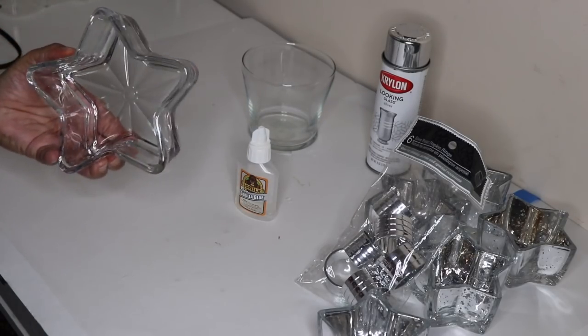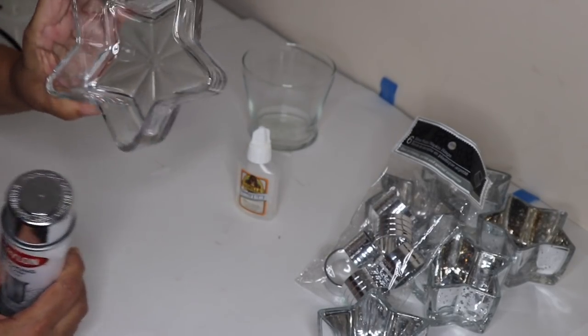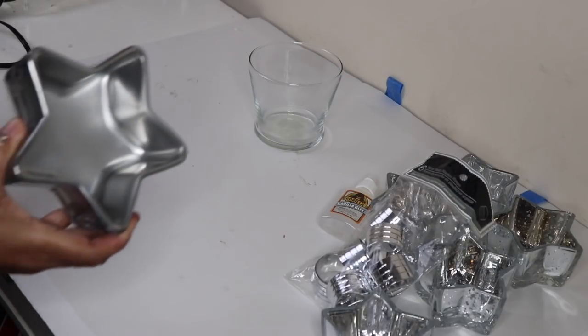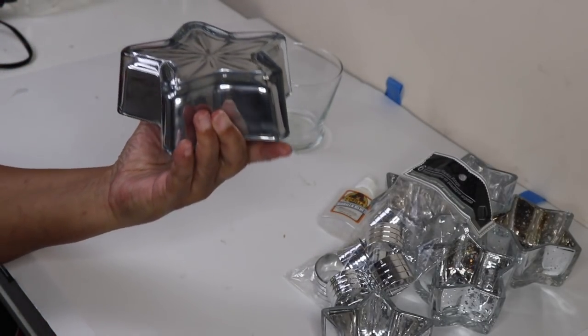First thing you want to do is take your glass bowl outside and spray paint it with the looking glass spray paint. Spray paint the inside of the bowl. After five coats of the looking glass spray paint you'll have a beautiful mirror finish.